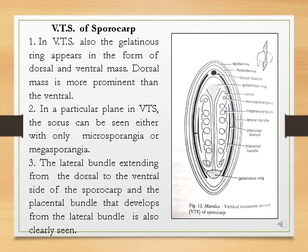Like the horizontal longitudinal section, in the vertical transverse section (VTS) also, you can find the gelatinous ring appearing in the form of dorsal and ventral mass, with the dorsal mass more prominent than the ventral. If you take a VTS in a particular plane, the sorus can be seen with either only microsporangia or only megasporangia. The lateral bundle extending from the dorsal to the ventral side of the sporocarp, and the placental bundle that develops from the lateral bundle, are also clearly seen in the vertical transverse section.